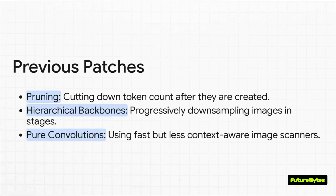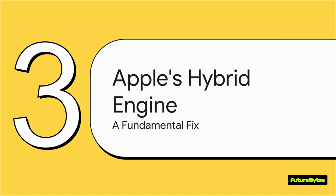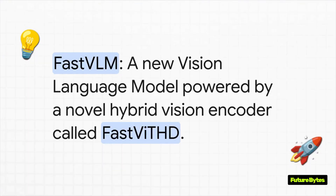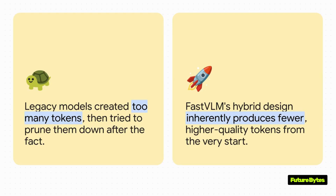Some tried pruning tokens on the fly, which is kind of like editing a long essay after it's already written. Others use hierarchical methods to summarize parts of the image, or even just ditched the really powerful but slow models for faster ones. But here's the thing — these were all just patches. They weren't a real, fundamental fix. And this is where Apple's approach is just genuinely different. They basically decided, instead of dealing with the traffic jam, let's just prevent it from ever happening in the first place. Their solution is called FastVLM.